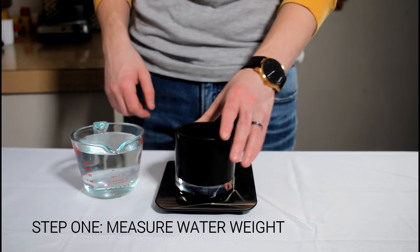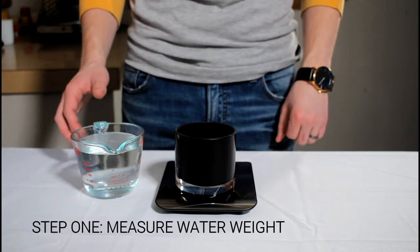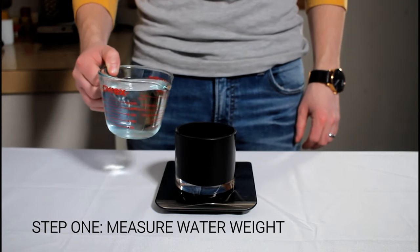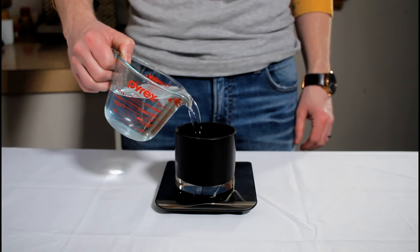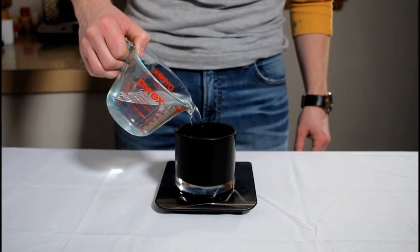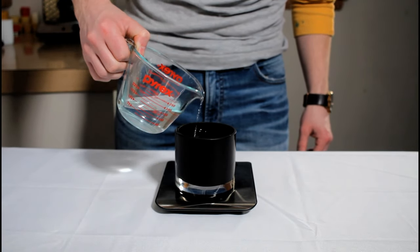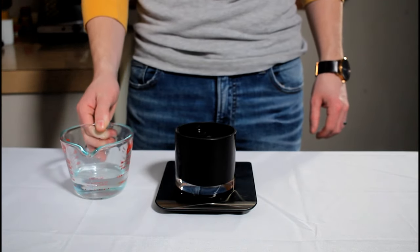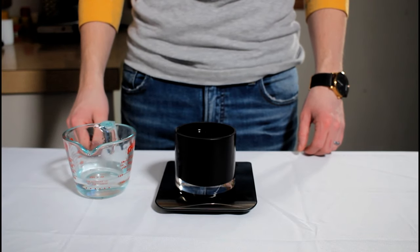First step is to figure out how much water fits into this jar. The reason we want to do that is because we don't know exactly how much wax is going to fit in, but if we know how much water weight fits in this jar, we can transform that into a wax blend weight that's appropriate for the jar.